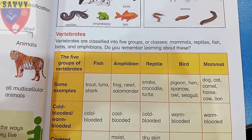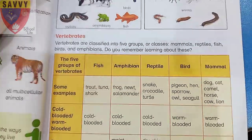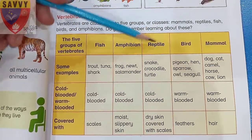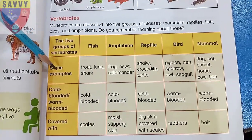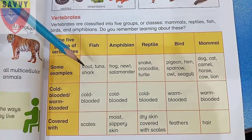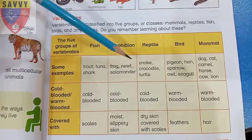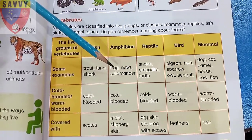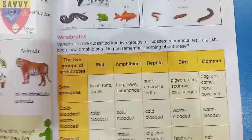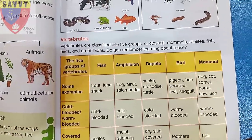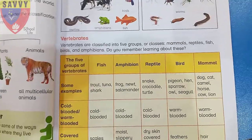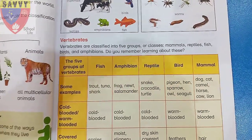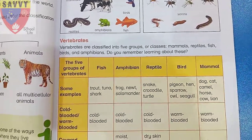The five groups of vertebrates are fish, amphibians, reptiles, birds, and mammals. Examples: fish — trout, tuna, shark; amphibians — frog, salamander; reptiles — snake, crocodile, turtle; birds — pigeon, hen, sparrow, owl, seagull; mammals — dog, cat, camel, horse, cow, lion.